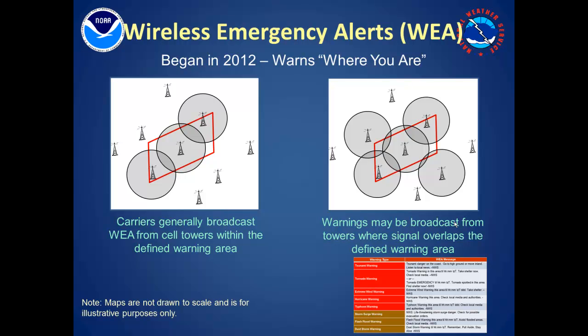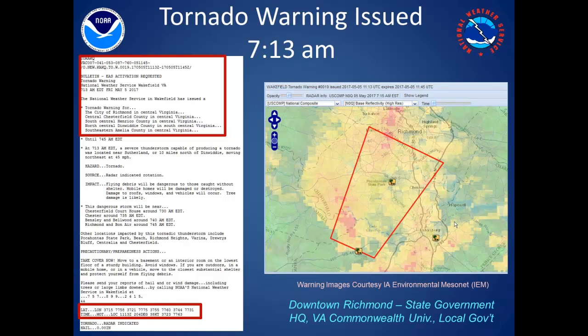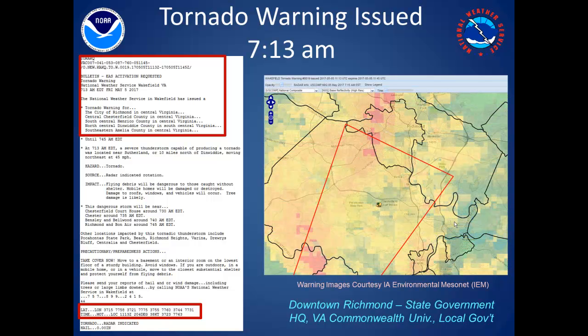Now let's apply the differences in various warning systems to the tornado warning issued for areas in and around the Richmond metro area during the warning hours of May 5th. The disparity between warning systems and their ability to warn based upon the polygon shape versus by city or county boundaries created some confusion as to who was or was not included in the warning. The text of the tornado warning issued at 7:13 a.m. on May 5th, which included portions of the city of Richmond, is seen on the left side of this slide, and the map of the polygon is provided at the right. When we zoom in on the city of Richmond, we can see that only southern portions of the city were in the warning polygon.